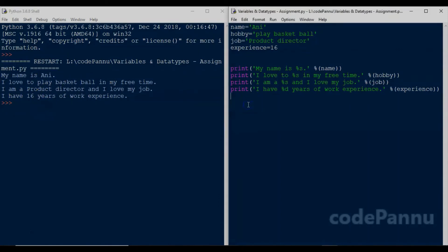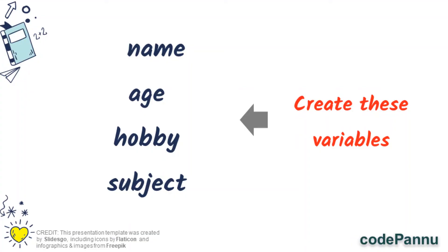So now for your assignment, you are going to create 4 variables: name, age, hobby, and subject, favorite subject basically.